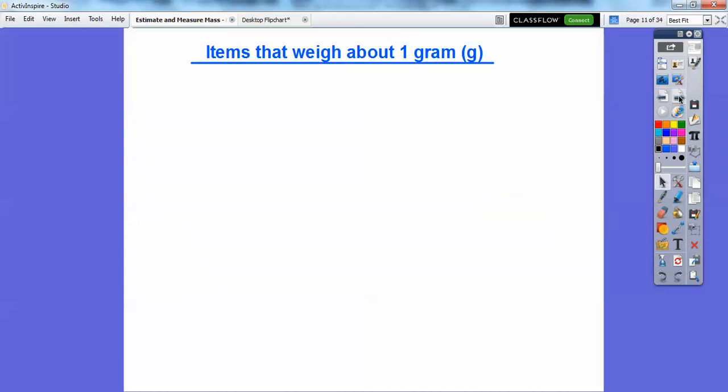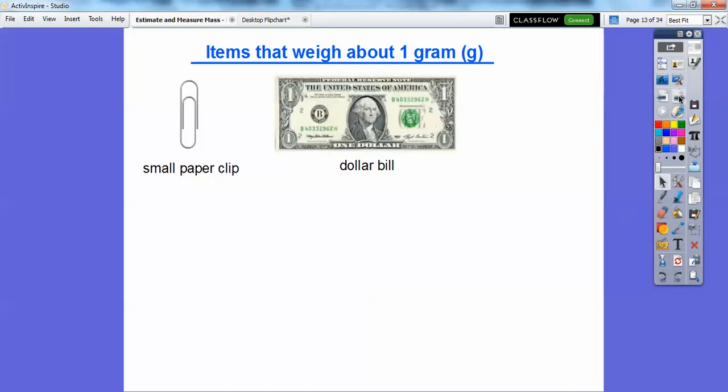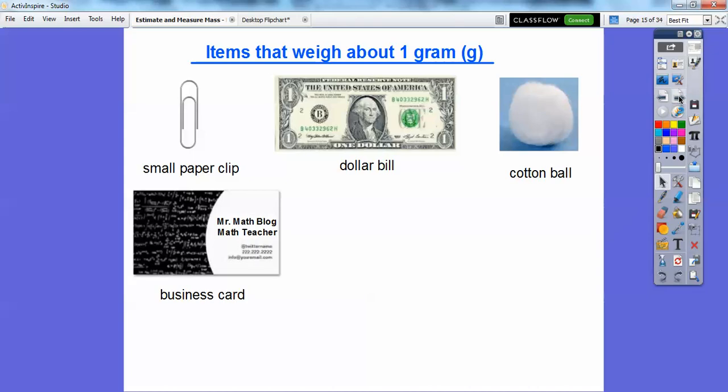So here's some items that weigh about a gram. A small paper clip weighs about a gram. A dollar bill weighs about a gram. Cotton balls also weigh about one gram. So things that are really light, a small business card weighs about a gram. Maybe a dime. A dime also weighs about a gram.